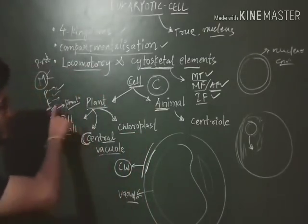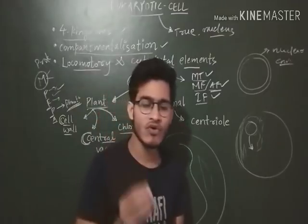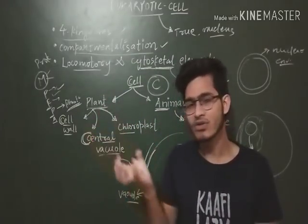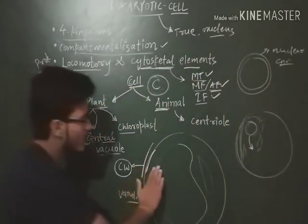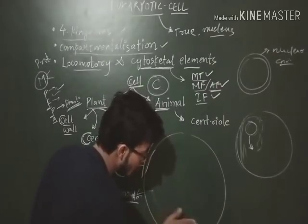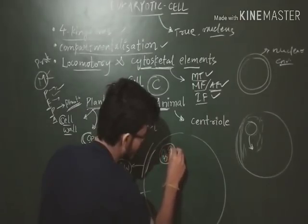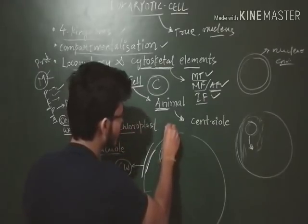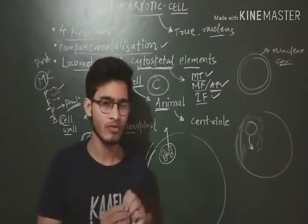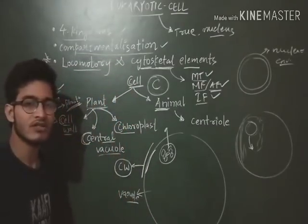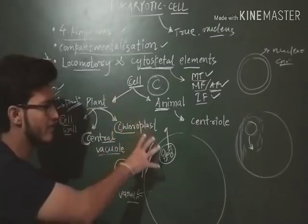Then chloroplast — we know that plants perform photosynthesis using the pigment chlorophyll, which absorbs light. That chlorophyll pigment is present inside the chloroplast, and the chloroplast is present in plant cells. The thylakoid membrane structure is part of the chloroplast. No animal cell has chloroplast. So the three C's — cell wall, chloroplast, and central vacuole — are present in plant cells but absent in animal cells.